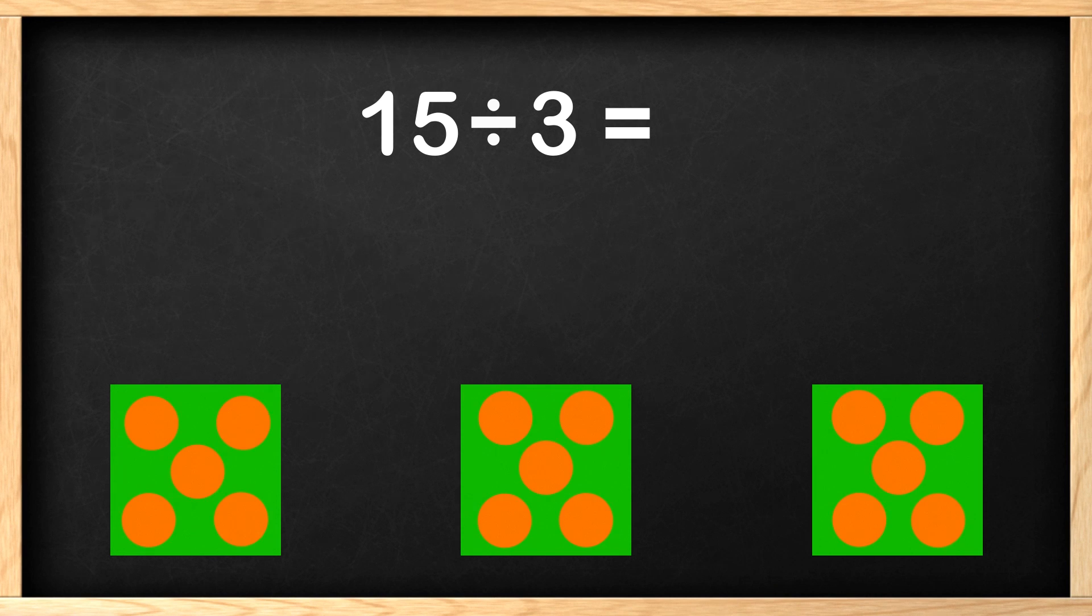We divided the 15 circles into 3 groups like the problem shows. Can you tell me how many circles are in each box? There are 5 circles! Great job! 15 divided by 3 equals 5.